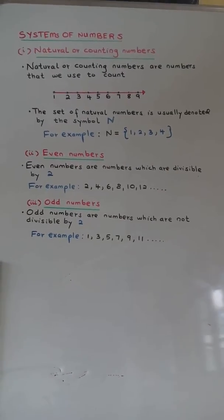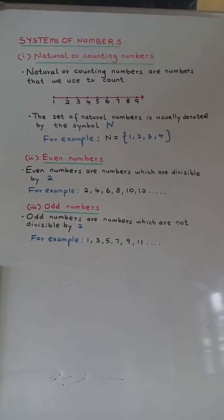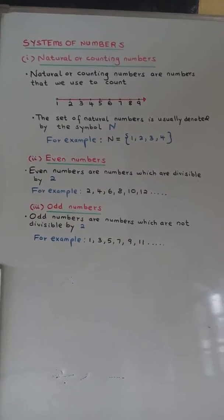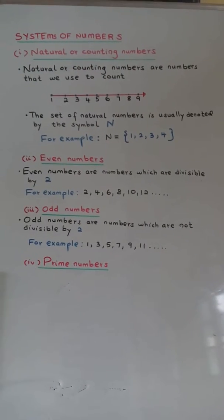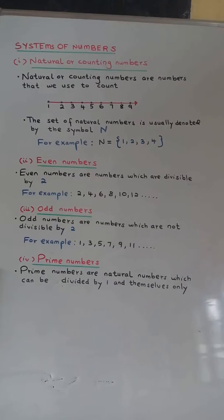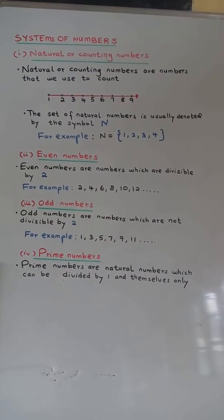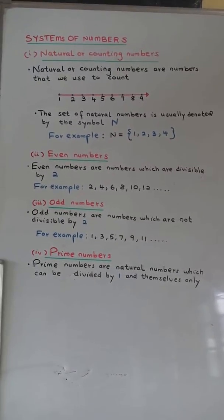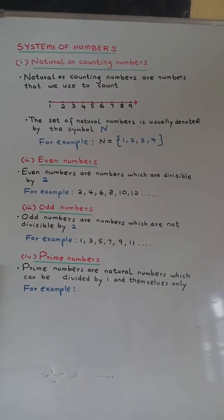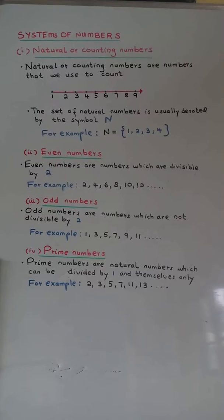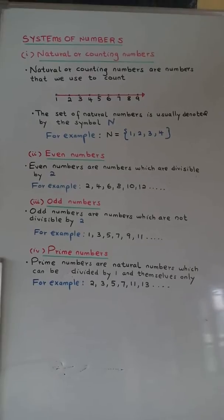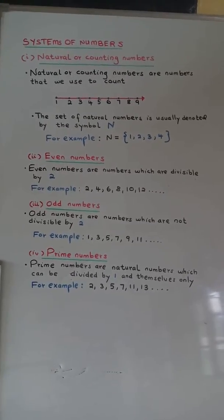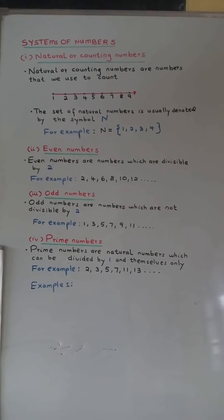For example: 1, 3, 5, 7, 9, 11, and so on. Prime numbers. Prime numbers are natural numbers which can be divided by one and themselves only. For example: 2, 3, 5, 7, 11, 13, and so on.